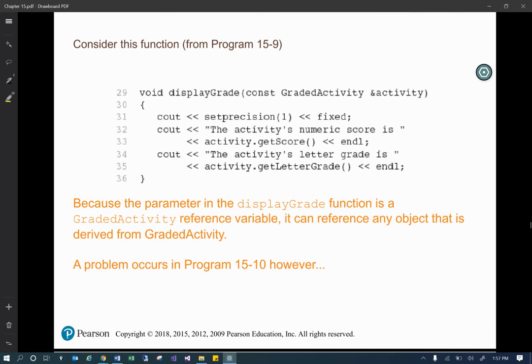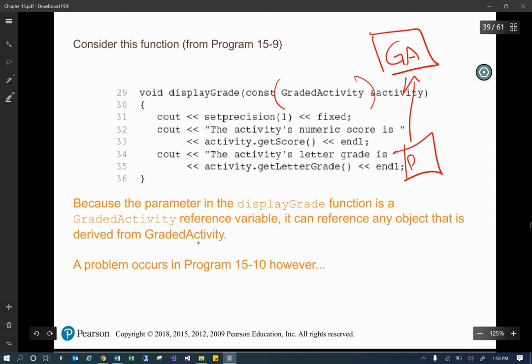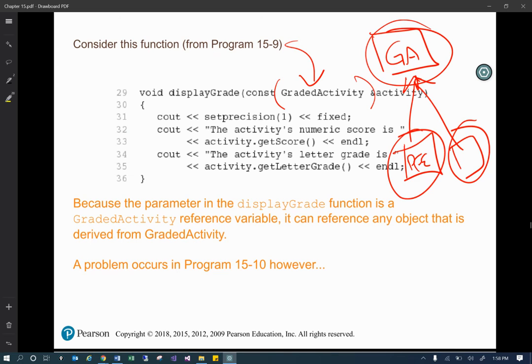So in this example, it's saying that graded activity, remember if we think back, we had classes, we had graded activity was the base class, and then we had extending from that was like the pass-fail or something like that. We had these different things expanding. So here in the parameter for this function, we're not using these derived classes. We're instead using the base class. And what that means is when we go to, if we make a type of this class, right, so let's call this kind of just A class, B class, and C class.